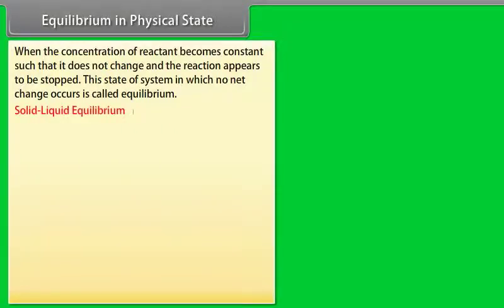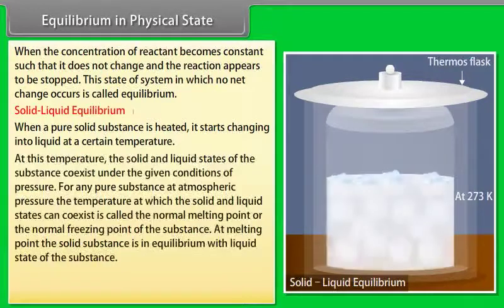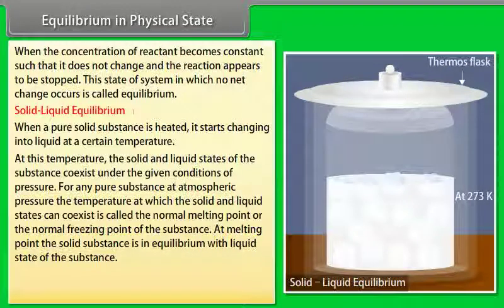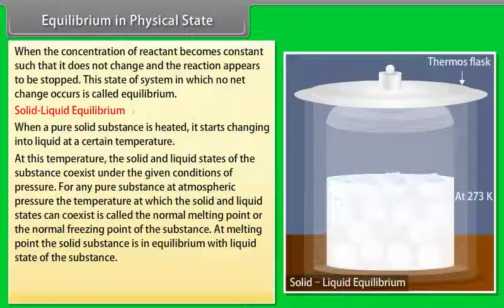Solid-Liquid Equilibrium: When a pure solid substance is heated, it starts changing into liquid at a certain temperature. At this temperature, the solid and liquid states of the substance coexist under the given conditions of pressure. For any pure substance at atmospheric pressure, the temperature at which solid and liquid states coexist is called the normal melting point or normal freezing point.